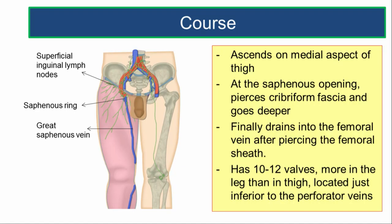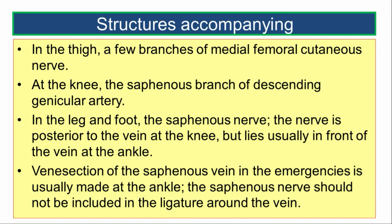Structures accompanying the great saphenous vein: In the thigh, a few branches of the medial femoral cutaneous nerve accompany the vein. At the knee joint, the saphenous branch of the descending genicular artery accompanies the vein. In the leg and the foot, the saphenous nerve accompanies the great saphenous vein. The nerve is posterior to the great saphenous vein at the knee but lies usually in front of the vein at the ankle.